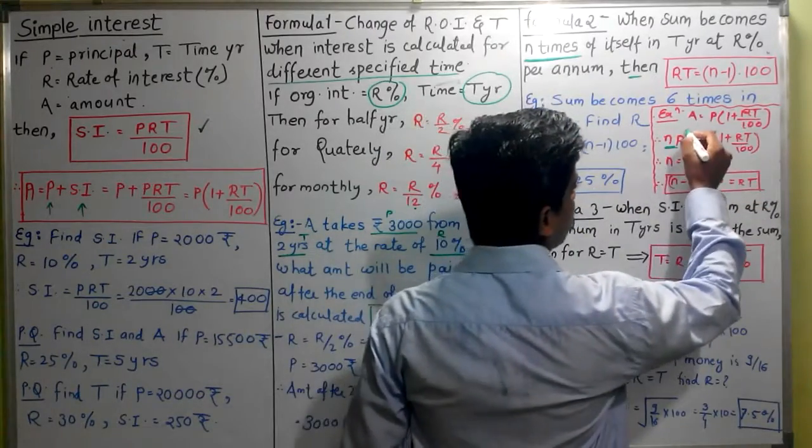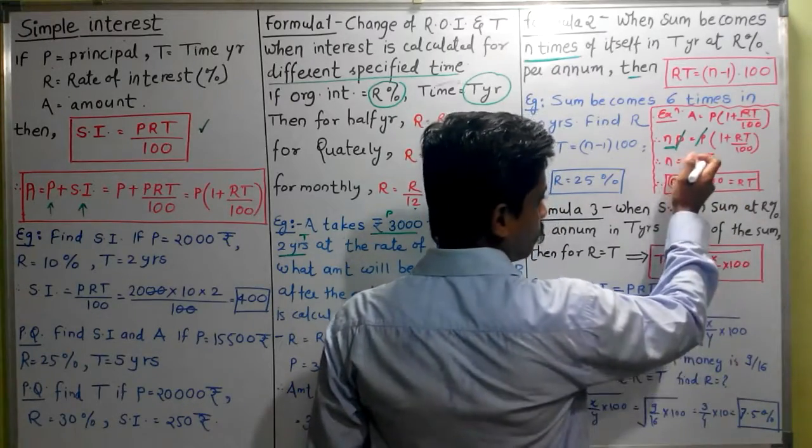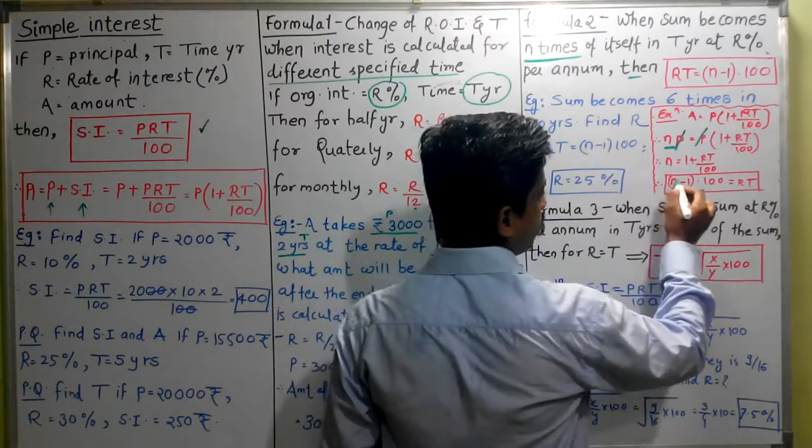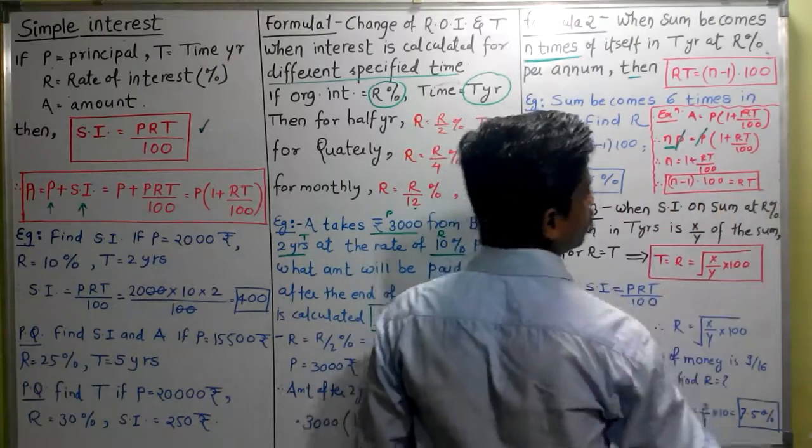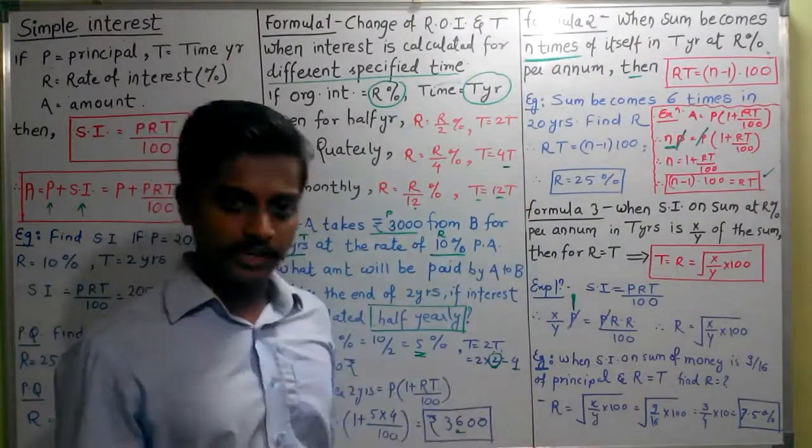Now rearrange this. P will get cancelled. So N is equal to 1 plus RT upon 100. One goes to the left hand side. So N minus 1 into 100 will be equal to RT. This is how this formula comes.